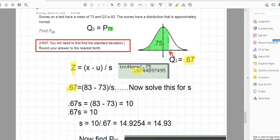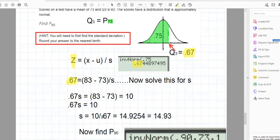Multiplying both sides by s, we have 0.67 times s is equal to 83 minus 73, which is 10. So we have s is equal to 10 divided by 0.67, which we can take to the second decimal place as 14.93.